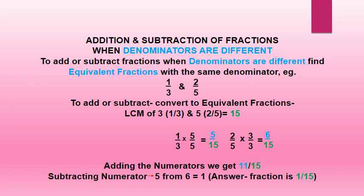Addition and subtraction of fractions when denominators are different. To add or subtract fractions with different denominators, find equivalent fractions with the same denominator. For example, for 1 upon 3 and 2 upon 5, the LCM of 3 and 5 is 15. So 1 upon 3 becomes 5 upon 15, and 2 upon 5 becomes 6 upon 15. Adding numerators gives 11 upon 15. Subtracting gives 6 minus 5 equals 1, so the answer is 1 upon 15.